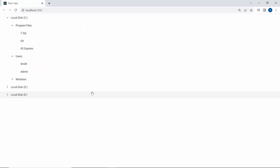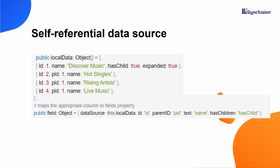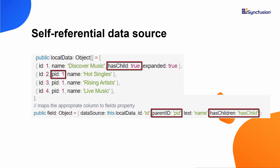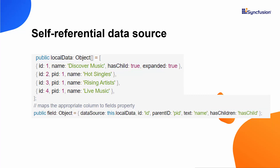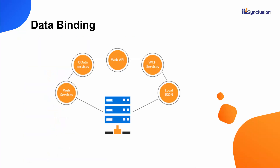So far we have seen how to bind hierarchical data as local JSON data to the TreeView component. Next, I will show you how to bind a remote data source to the component. This remote data source contains self-referential data. The objects have two additional properties: parentID and hasChildren. The hasChildren property indicates whether a node has child nodes or not. The parentID property maps the appropriate parent node to its child node. I will use Syncfusion's Data Manager library, which acts as a gateway between the TreeView component and data source, and uses queries to interact with both local and remote data sources.